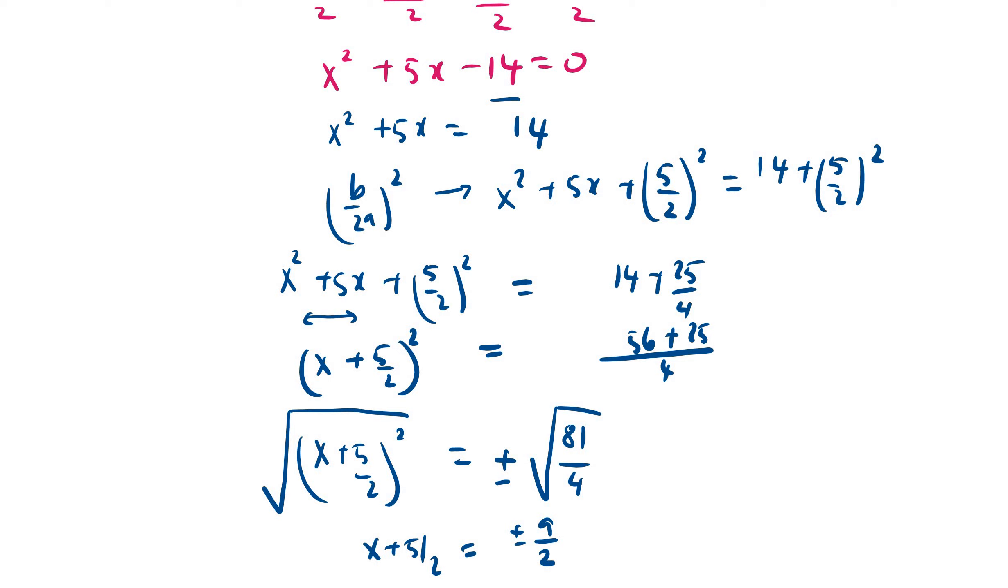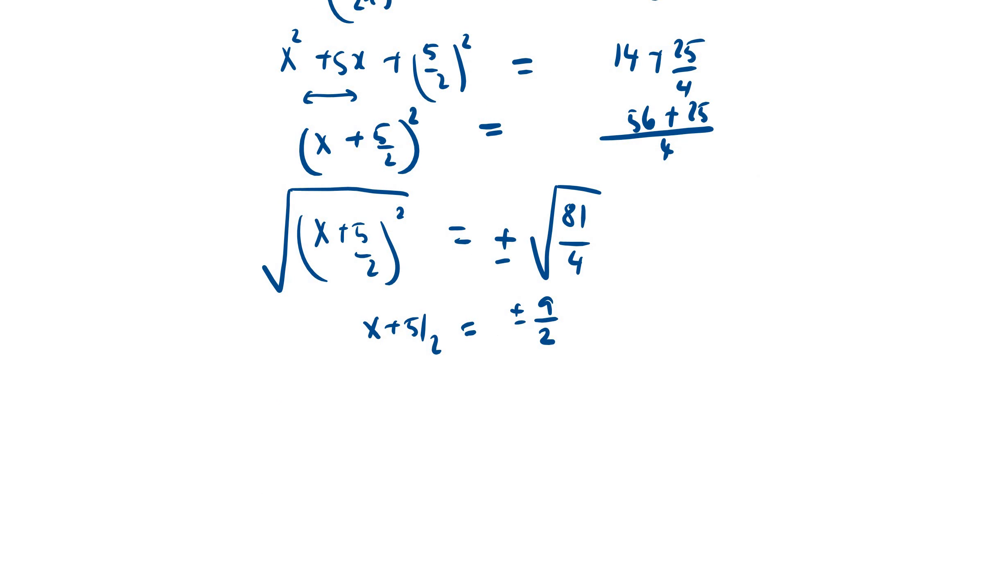We're going to take 5/2 to the other side. So you have x equals to -5 ± 9 divided by 2. Eventually x will be (-5 - 9)/2 or (-5 + 9)/2. So the value of x will be -14/2 or 4/2 which is 2. Therefore x equals to -7 or x equals to positive 2.